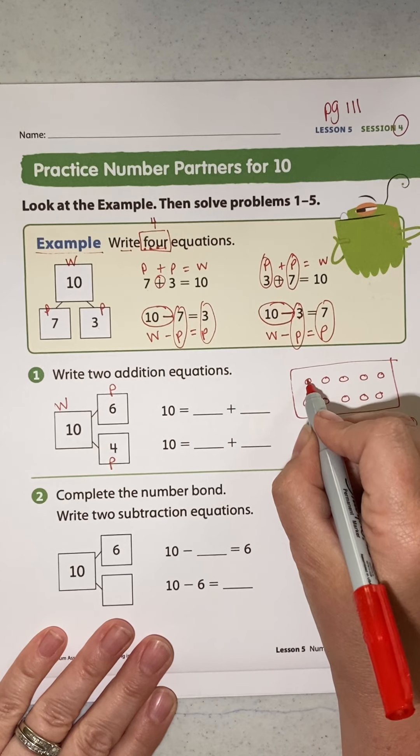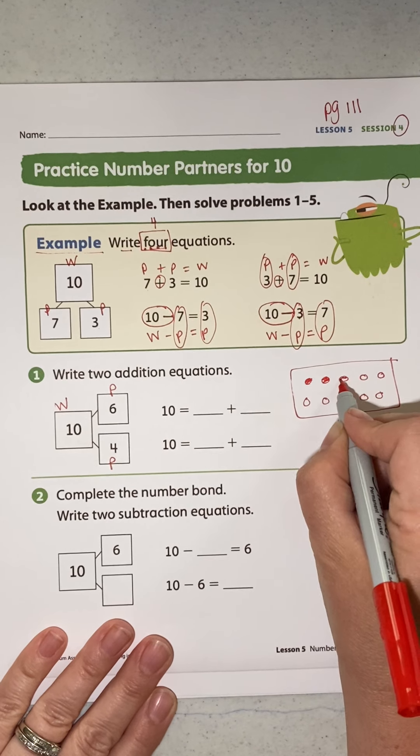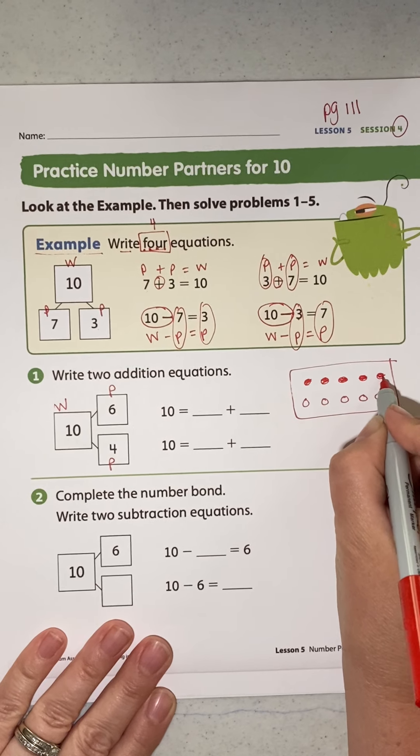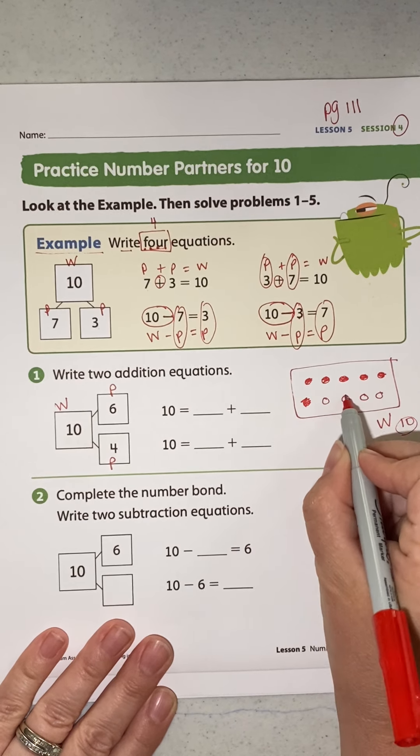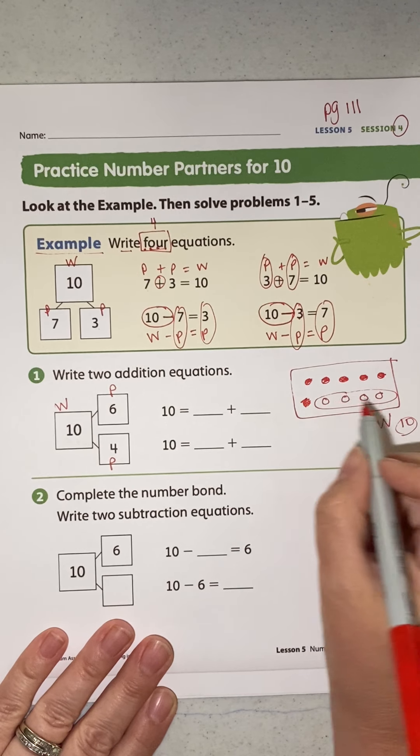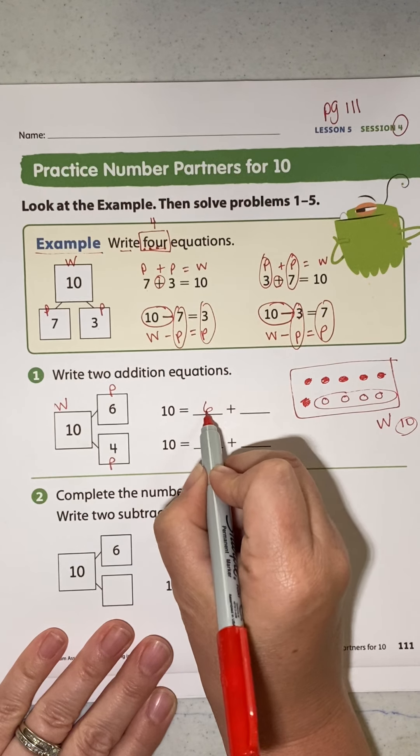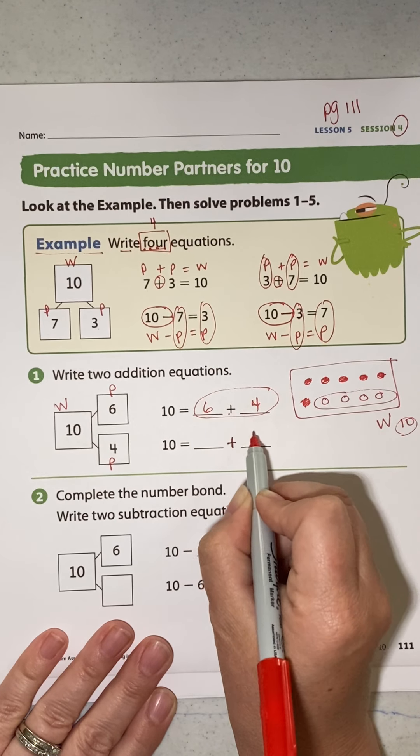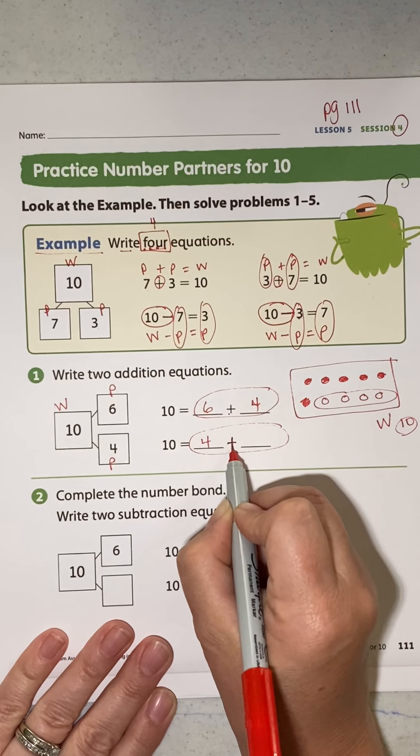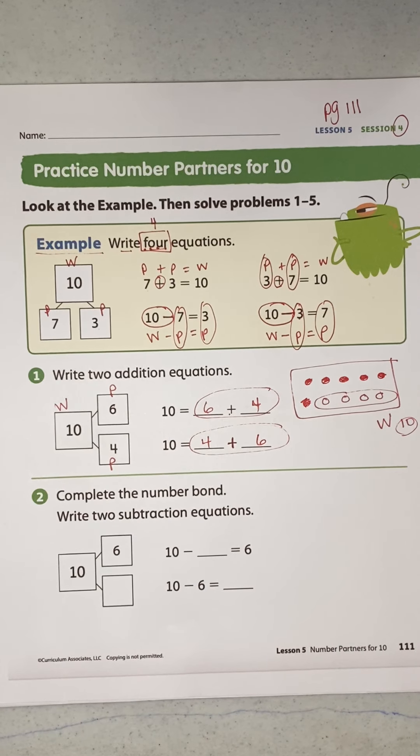1, 2, 3, 4, 5, 6. How many more do I need to get to 10? Right. 6 plus 4 equals 10. And here's my plus. 4 plus 6 equals 10.